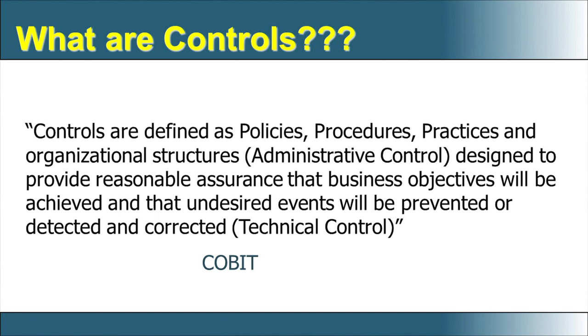Once administrative controls are in place, undesired events — those prohibited by policy, not stated in policy, or not part of any procedure or practice — should be either prevented or, if they happen, detected and subsequently corrected. Technical control takes care of stopping these undesired events, while administrative control defines what are desired and undesired events. Control from a broad perspective is a combination of administrative and technical control.